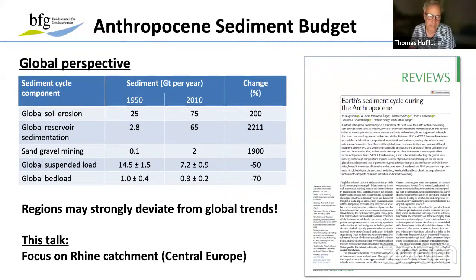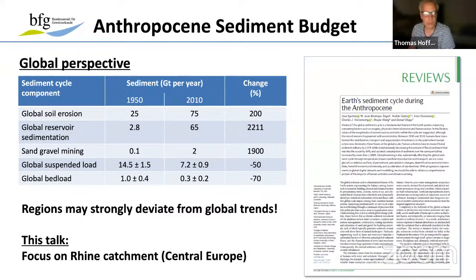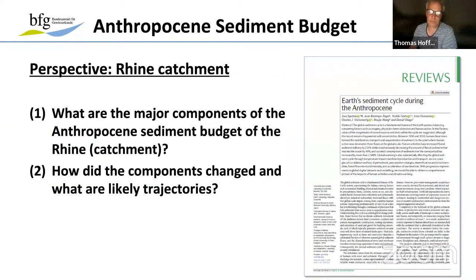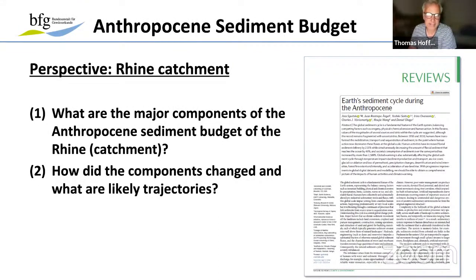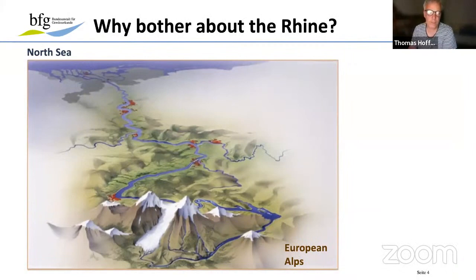The same is true for global bed load, decreasing in response to the construction of large dams and reservoirs which stop sediment flowing from land to the ocean. However, these are global numbers, and at the regional scale we might see very different trends. Therefore, I'd like to show you results from the Rhine in central Europe — specifically, what are the major components of the Anthropocene sediment budget of the Rhine and how did these components change.